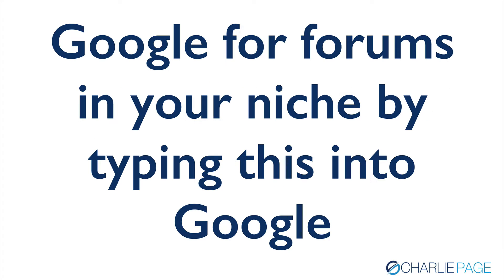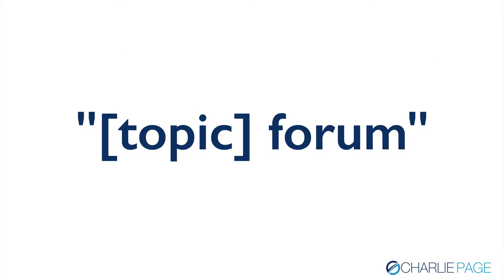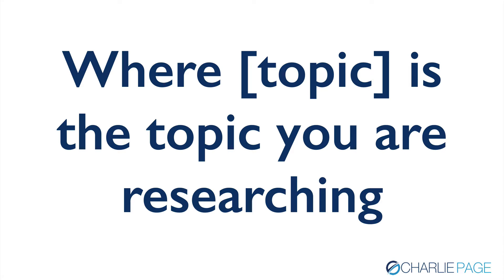Here's how you get started: you start with Google. You take a search for forums in your niche by typing the name of your topic and then the word 'forum' in quotes. Don't type in 'topic' with brackets — that's a placeholder for the name of your topic. Let's say it's travel, pet grooming, or making money online. You type that in with the word 'forum' in quotes and you're going to get great results. Replace the word 'topic' with the area you're researching.